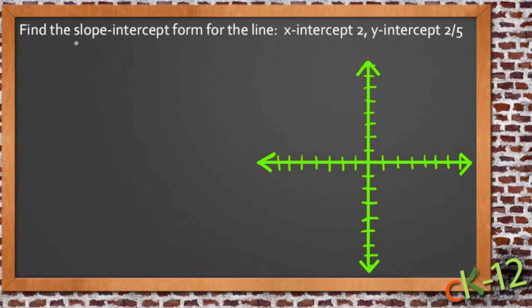The topic of this lesson is slope intercept form, and we're going to use some data sent to us by a student named Javier, who had a couple questions about how to find the slope intercept form for a line that has an x-intercept of 2 and a y-intercept of 2 fifths. So let's take that data and use it as sample data as we're working through here.